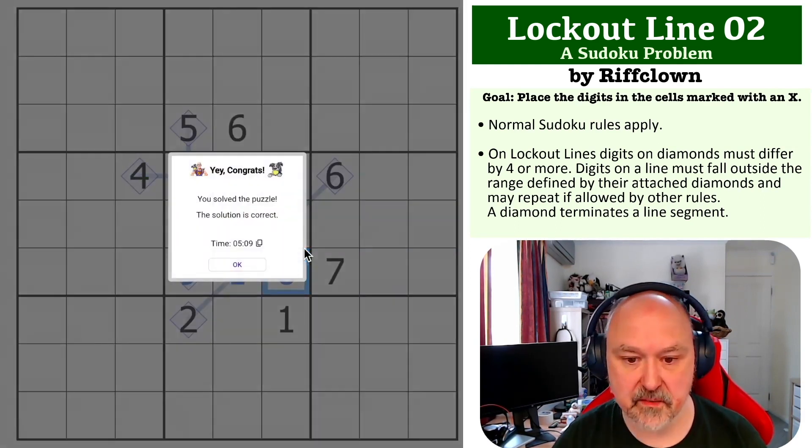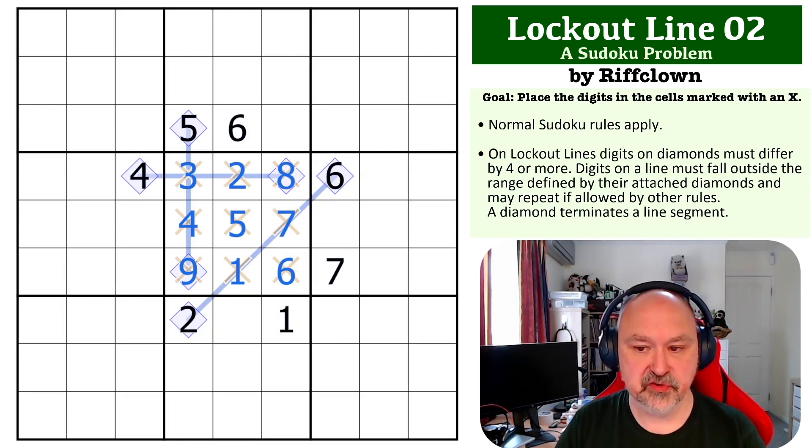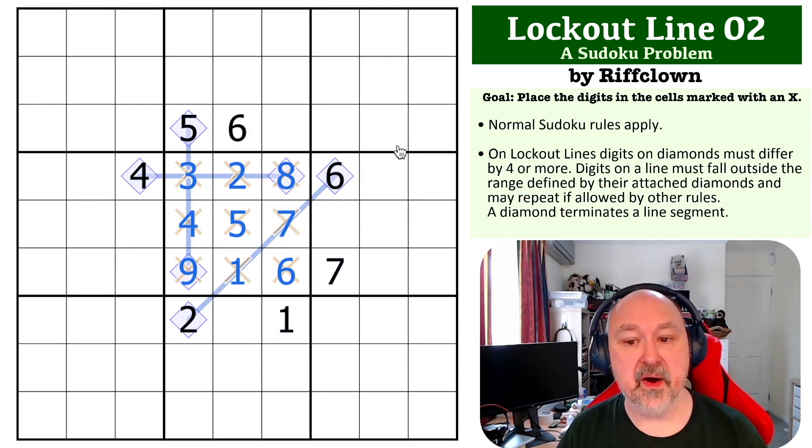That is the solution to the lockout line problem. It's all about restricting the digits that can go on the lines and then using the bounds that are set by four apart. Very nice little problem to explain lockout lines and do it in a concentrated way. I really like this one.